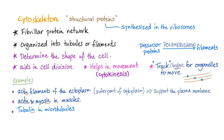They will determine the shape of the cell. They will help in cell division, in the movement of the cell, also known as cytokinesis. Cytoskeleton — 'cyto' means cell and 'kinesis' from kinetic, which means movement. They will form a track or bridge for the organelles to walk on.